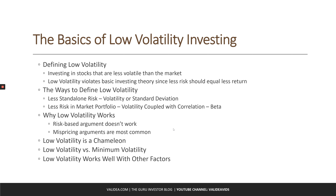Investors will also often confuse the terms low volatility and minimum volatility, but they can be very different. Low volatility involves investing in stocks that have the lowest levels of volatility on their own. Minimum volatility is a portfolio construction process that focuses on the volatility of the portfolio itself, looking to find the optimal combination of stocks that produces the lowest volatility at a portfolio level. That can involve stocks that have low volatility on their own, but it can also involve adding more volatile stocks if they reduce the volatility of the overall portfolio.